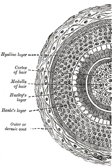In some mammals, such as hedgehogs and porcupines, the hairs have been modified into hard spines or quills. These are covered with thick plates of keratin and serve as protection against predators. Thick hair such as that of the lion's mane and grizzly bear's fur do offer some protection from physical damages such as bites and scratches.